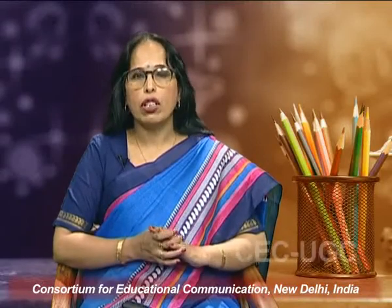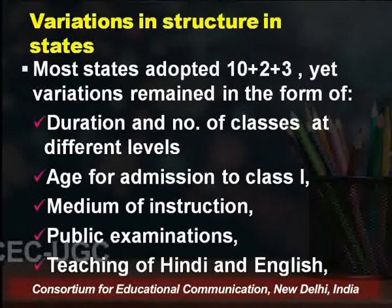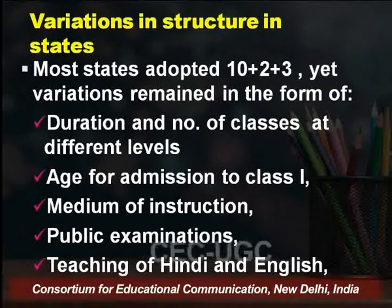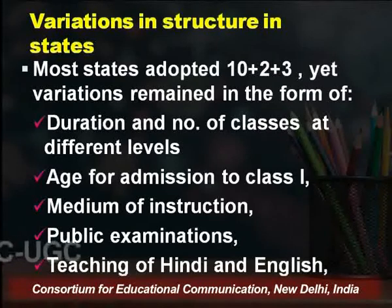Friends, if you remember in our last lecture, we talked about the Kothari Commission. We talked about how elaborate the Kothari Commission was — it is known for the structuralization of the education system. It was the one which advocated the education system in the form of 10+2+3. The Kothari Commission was responsible for defining the age for admission in class 1, and what kind of medium of instruction should be advocated in schools.